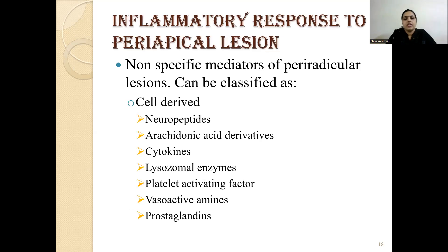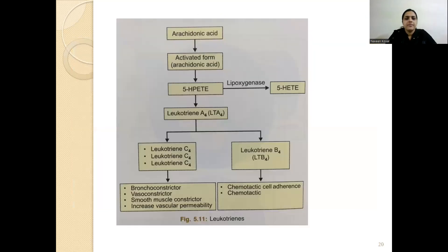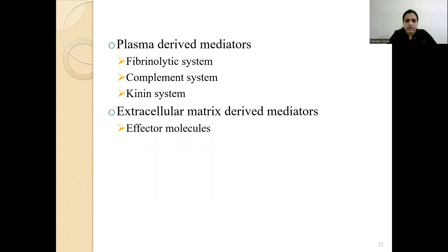Cell-derived mediators include neuropeptides, arachidonic acid derivatives, cytokines, lysosomal enzymes, platelet-activating factor (PAF), vasoactive amines, and prostaglandins. Leukotrienes are of different types: leukotriene C4 causes bronchoconstriction, vasoconstriction, and smooth muscle contraction, and also increases vascular permeability. Leukotriene B4 causes chemotaxis and cell adherence.